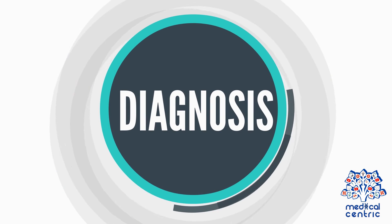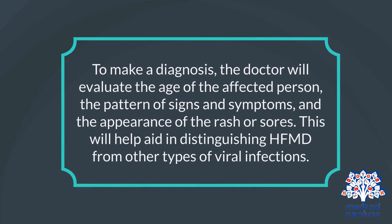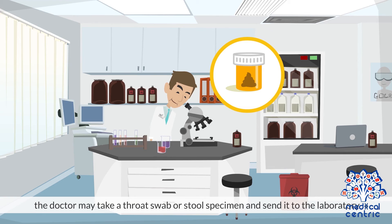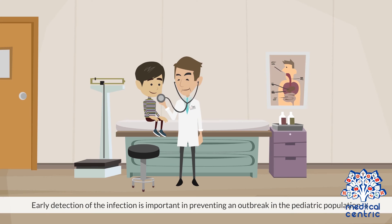To make a diagnosis, the doctor will evaluate the age of the affected person, the pattern of signs and symptoms, and the appearance of the rash or sores. This will help in distinguishing HFMD from other types of viral infections. To determine the strain of virus causing the illness, the doctor may take a throat swab or stool specimen and send it to the laboratory. Early detection of the infection is important in preventing an outbreak in the pediatric population.